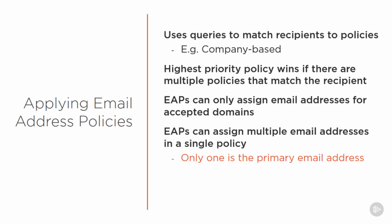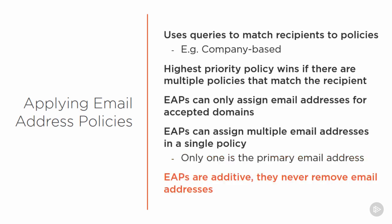The primary email address for a recipient such as a mailbox user is the address that their emails will appear to be from when they send to other people. The final point is that email address policies are additive — they only add email addresses to recipients, they never remove them. If you have a need to remove a whole heap of email addresses from multiple recipients for domains you no longer want to use, you would need to do that using some form of scripting or automation, or edit them one by one.